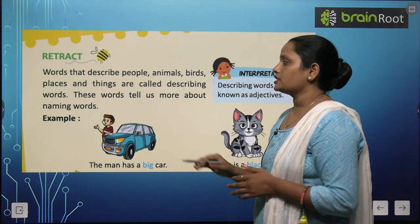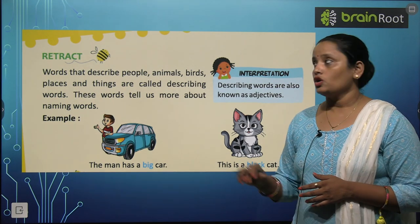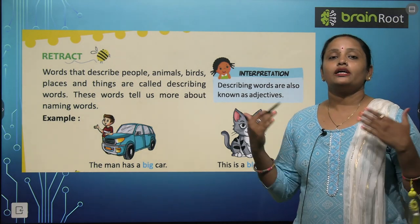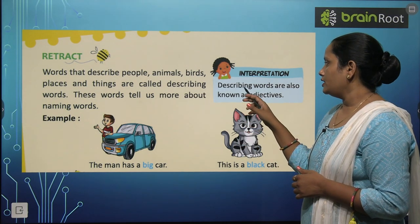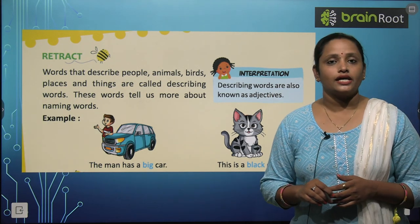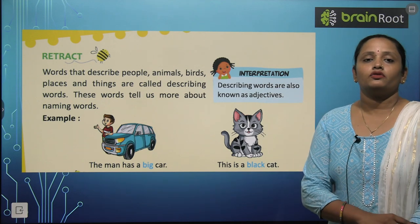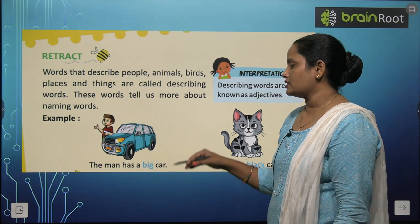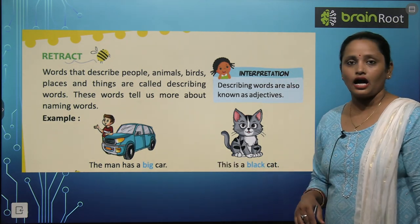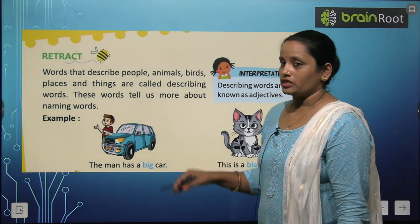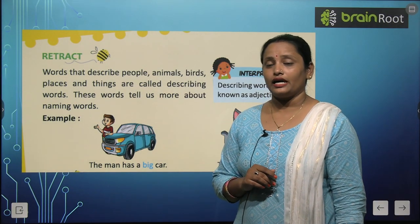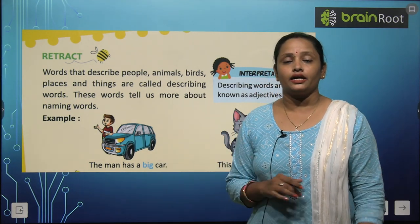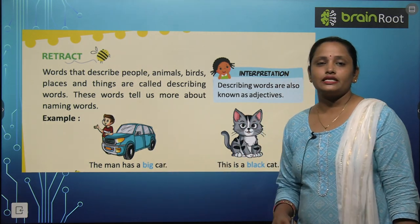These words tell us more about naming words. Aur ye jo words hai, ye hame naming words ke baare mein aur zyada bataate hai. Describing words are also known as adjectives. In describing words ko hum adjectives bhi kehte hai. Here the example is: the man has a big car. Toh yahan pe ek admi hai jiske paas ek car hai. Ab aap se mein puchhu ki car kaisi hai? Car is big — big car hai. Toh car ko kaun sa word describe kar raha hai? Big.